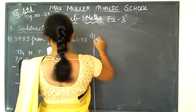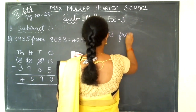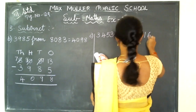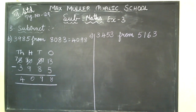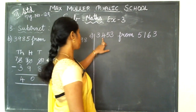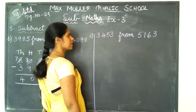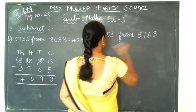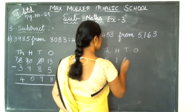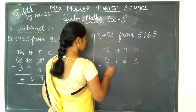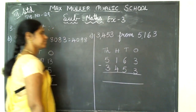Next, C: 3,453 from 5,163. Third one — they have given 3,453 from 5,163. So which is the bigger number here? 5,163 is the bigger number. So we will write the place values: 1,000, 100, 10s, 1s. 5,163 minus 3,453 — you have to subtract this one. Copy done fast.